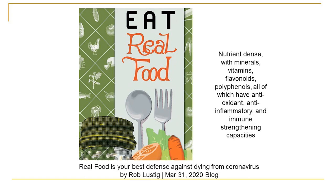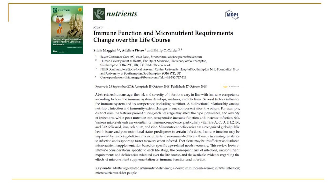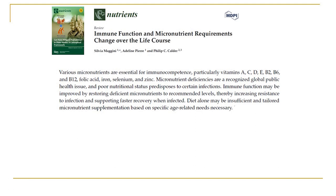Real food is our best defense, providing nutrient-dense minerals, vitamins, flavonoids, and polyphenols that help maintain a healthy gut and immune system. For more on immune function and micronutrient requirements, the article by Maggini is an excellent review. It covers essential micronutrients for immune competence — especially vitamins A, C, D, E, B2, B6, B12, folic acid, iron, selenium, and zinc. Micronutrient deficiencies impair our immune systems. The recommendation is to eat foods high in these vitamins and minerals, and if you feel you're not getting adequate nutrient replenishment, consider supplements.